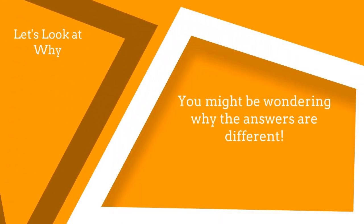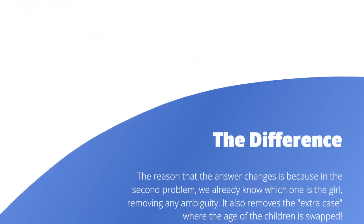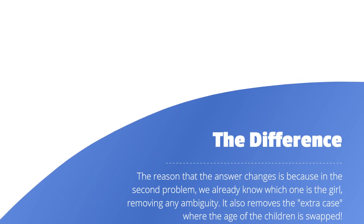You might be wondering, why are the answers different? Let's look at why. The difference. The reason that the answer changes is because in the second problem, we already know which one is the girl, removing any ambiguity. It also removes the extra case where the age of the children is swapped.